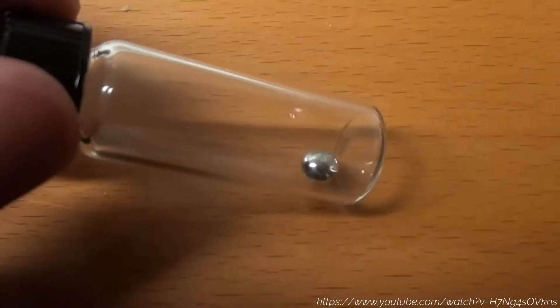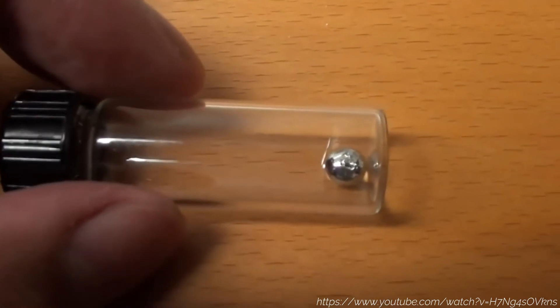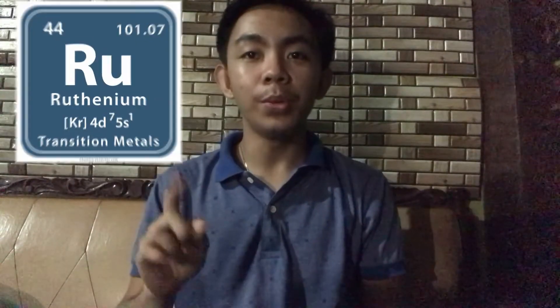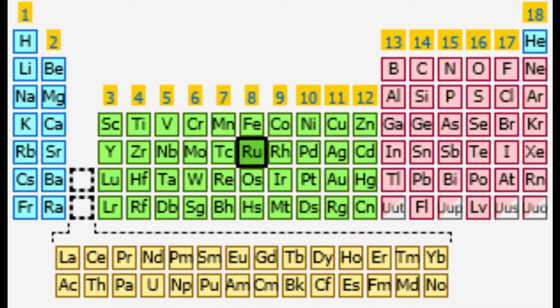Let us first talk about ruthenium itself. Ruthenium is a rare, hard, brittle, silvery transition metal with the symbol Ru and atomic number 44. According to our research, it is not affected by air, water, and acid, but it is dissolved by molten alkalies. Moreover, it is a polyvalent hard white metal which belongs to the platinum group and is in group 8 of the periodic table.